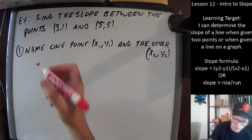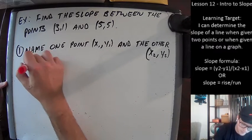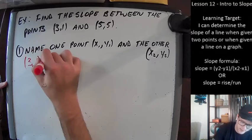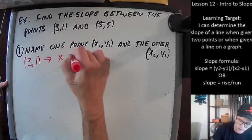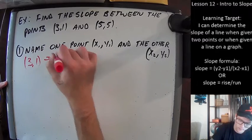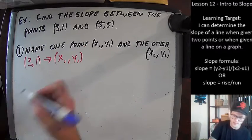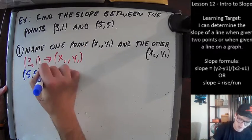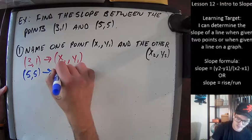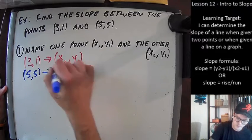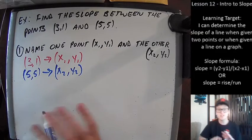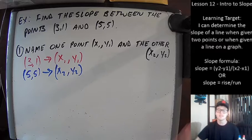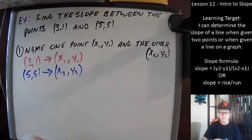The point (3, 1) — that's the first point I see — I'm going to call that x₁, y₁. And then the other point (5, 5) I'm going to call x₂, y₂. Again, this is just for organizational purposes — like giving people with the same name a last initial.